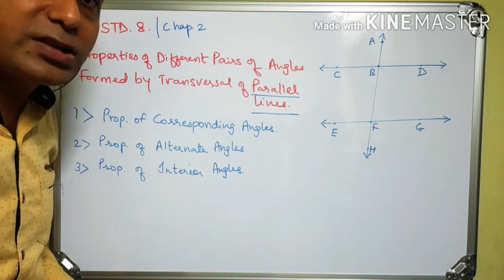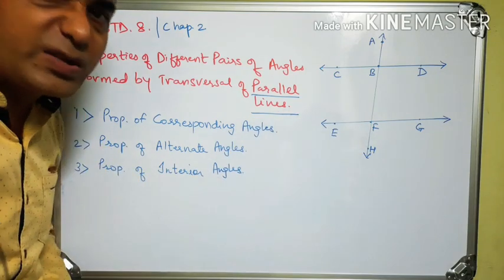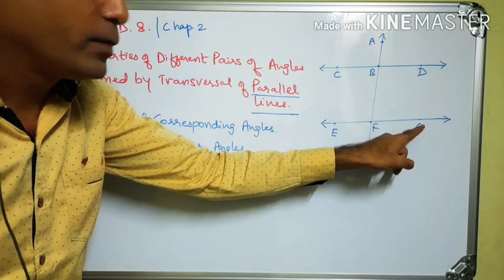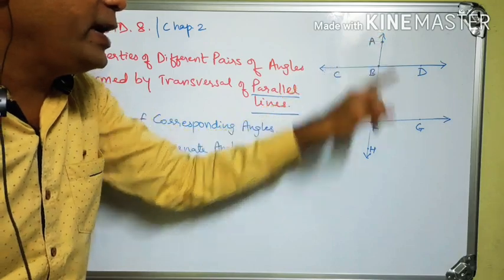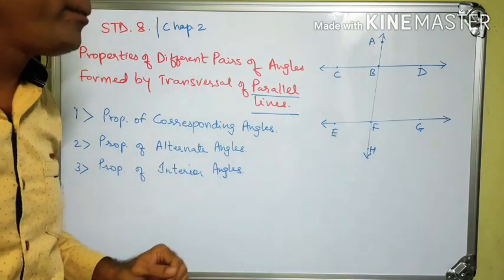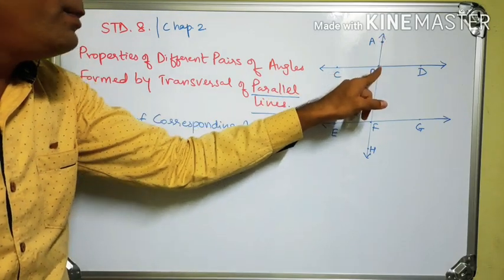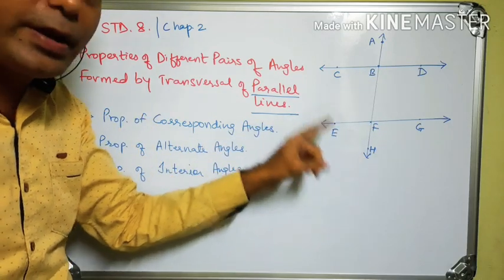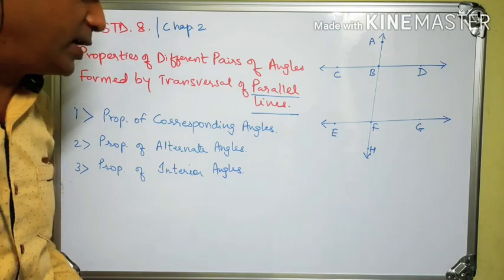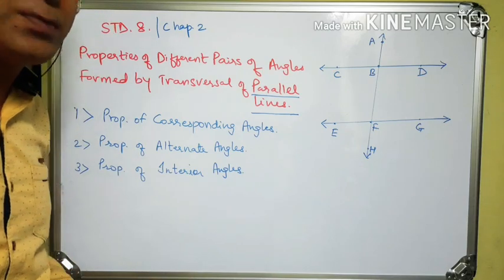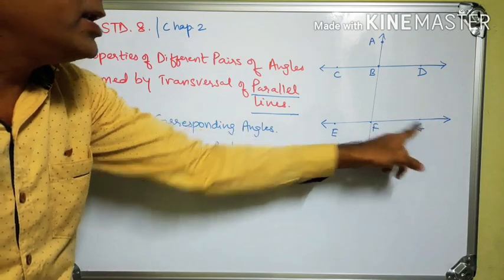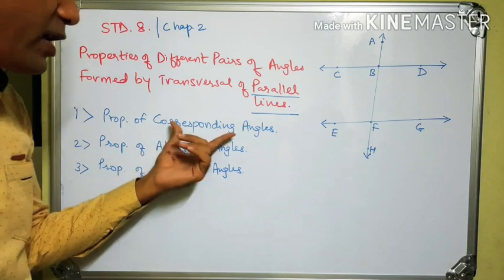Now let's see which pairs of corresponding angles will be congruent. The first pair: angle ABD and angle BFG, also named angle DBA and angle GFB — this pair is congruent. Another pair: angle ABC and angle BFE — also congruent. There are four pairs total. The remaining two pairs are angle CBF and angle EFH, and angle DBF and angle GFH. All four pairs of corresponding angles are congruent.